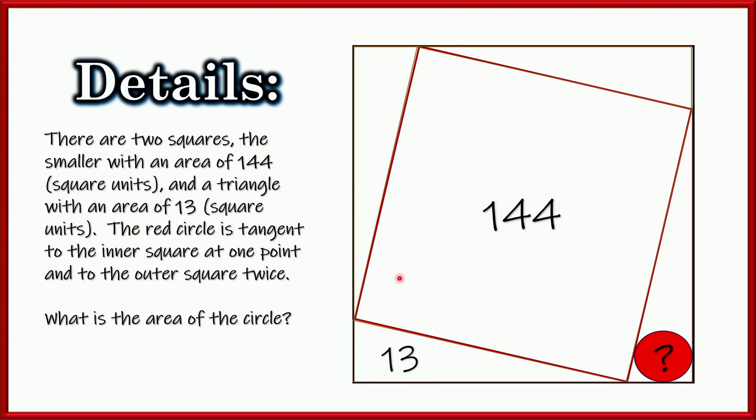So we've got two squares, an outer square and an inner square. The inner square has an area of 144. We've got this little triangle right here with an area of 13 units. And we've got a little red circle tucked away over here. We've got to find the area of that circle. That circle's tangent to the outer square in two spots and this little diagonal inner square here. So those are our clues.